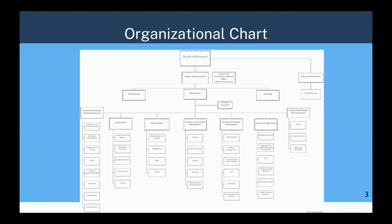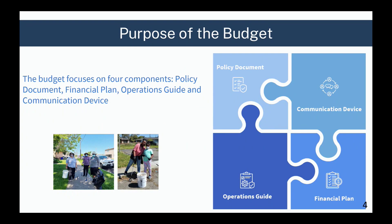Here is our org chart. In general, the city council has three direct reports: the city manager, the city attorney, and the city clerk. All department heads roll up into the city manager. I will now introduce Andrea Miller, our director of finance.